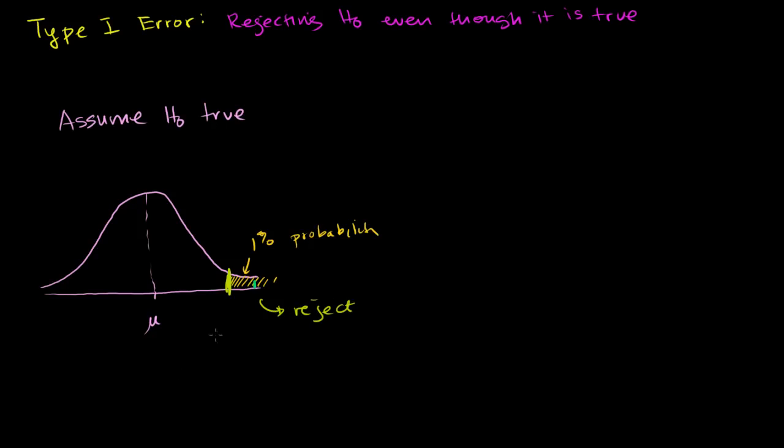Now what does that mean though? Let's say that this area, the probability of getting a result like that or that much more extreme, is just this area right here. Let's say that's 0.5%. And because it's so unlikely to get a statistic like that, assuming that the null hypothesis is true, we decide to reject the null hypothesis.